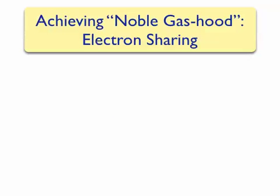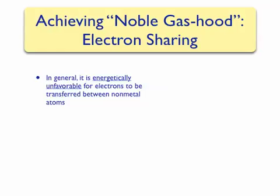In a previous lecture we've seen that when a metal reacts with a nonmetal, the metal can transfer its valence electrons to the valence shell of the nonmetal, forming two ions: a metal cation and an anion. Both ions have electron configurations similar to noble gases, making them stable.